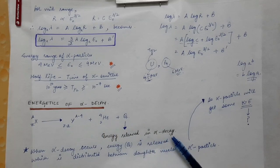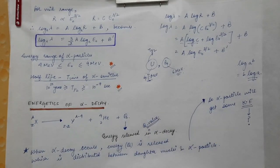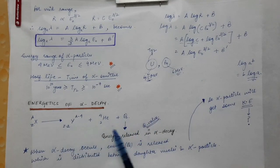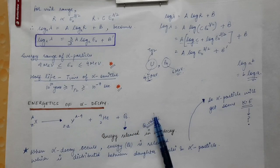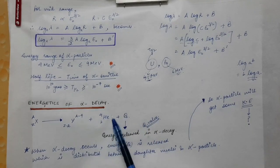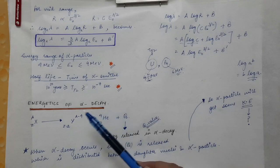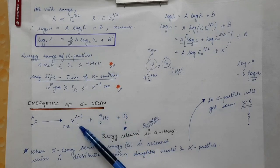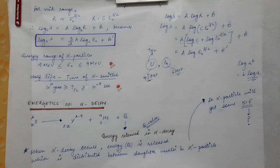The energy released in alpha decay is called the Q value of the decay process. This energy is distributed between the daughter nucleus and the alpha particle — both receive a share of the released energy. The Q value is the sum of the kinetic energies imparted to the daughter nucleus and the alpha particle.